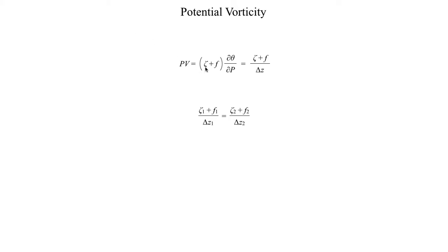We introduced potential vorticity as this quantity: potential vorticity equals the absolute vorticity times dθ (potential temperature) over dp (pressure). This is basically a stability term — it represents how stable the atmosphere is. You can also rewrite that as just the absolute vorticity (zeta plus f), where f is the Coriolis parameter representing Earth's vorticity or the vorticity caused by Earth's rotation, divided by the depth of the column in question.